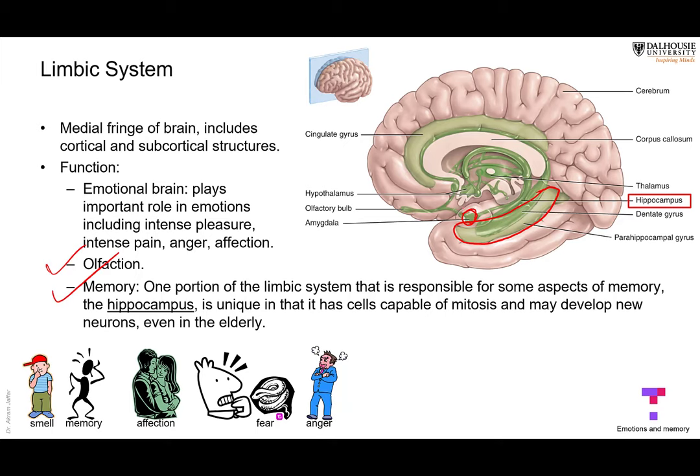The hippocampus is mainly concerned with memory. It has something unusual about the nervous system: a small area called the dentate gyrus whose cells, although they are neurons, can undergo mitosis. Remember we said nervous tissue does not multiply — this is one exception. These are neurons, not neuroglia, and they can undergo mitosis. Neuroglia can also undergo mitosis, but that is not unusual. What is unusual here is that these neurons can divide.